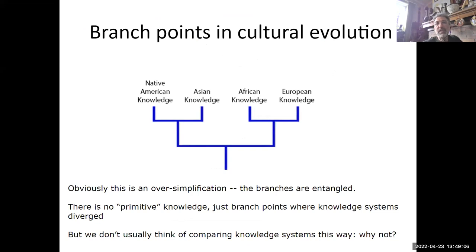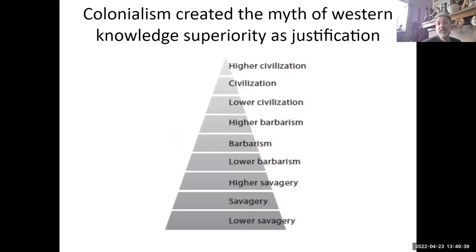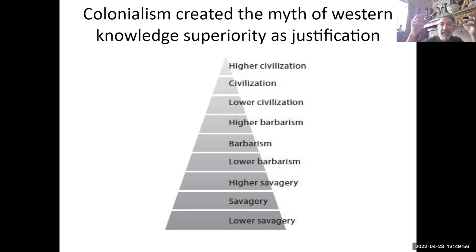I think about cultural evolution the same way. At one point there were maybe 20,000 humans in the entire planet, and as we spread out from Africa, knowledge systems started to diverge — with all kinds of entanglement, trade, and exchange. There's no primitive knowledge, just branch points where things diverged. But we're not taught to think of it that way. We're taught to think of knowledge as a pyramid, with European knowledge at the top, most civilized, and indigenous societies below.